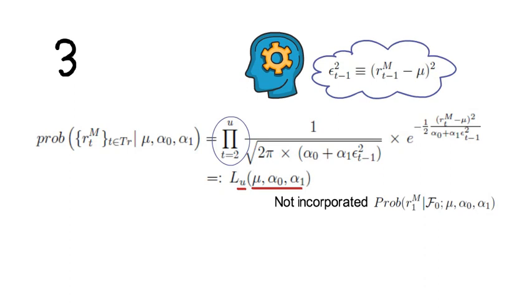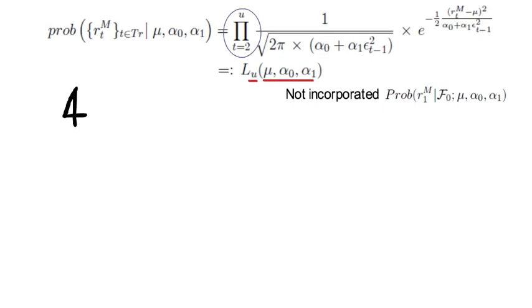Now fourth, I simplify the expression through a monotone transformation, which I call G, and which stands for the joint log-likelihood function. So G of our parameters is nothing else than the log of the joint likelihood, which takes the following expression.